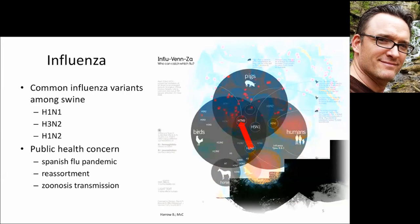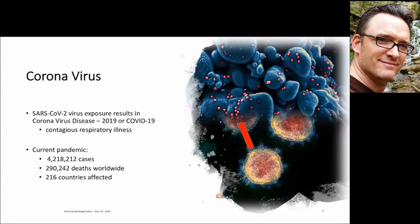Another public health problem we're talking about a lot right now is the SARS-CoV-2 virus that results in coronavirus disease, or COVID-19, which is also a contagious respiratory illness. As of a couple days ago, I pulled these numbers off the World Health Organization website: there are about 4 million cases, about 290,000 deaths in 216 countries affected. The image on the right side of the slide shows a corona-shaped virus in an electron micrograph, with the red dots showing the coronavirus on human cells.